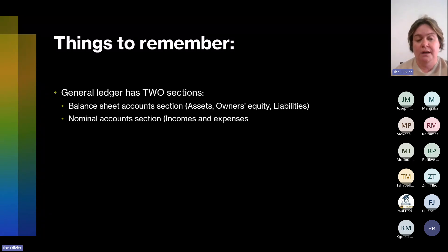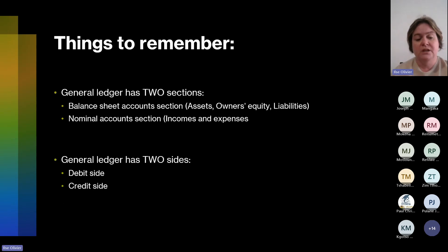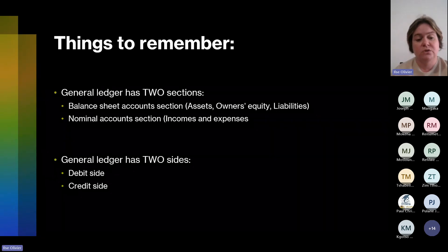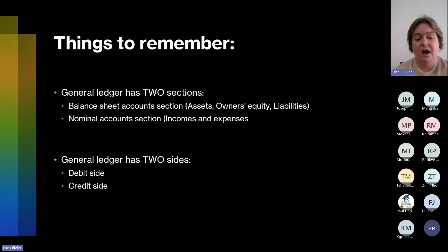Number one, the general ledger has two sections: namely the balance sheet account section — that is your assets, your owner's equity and your liabilities — and your nominal account section, that is your income and your expenses. The general ledger also has two sides: the debit side and the credit side.